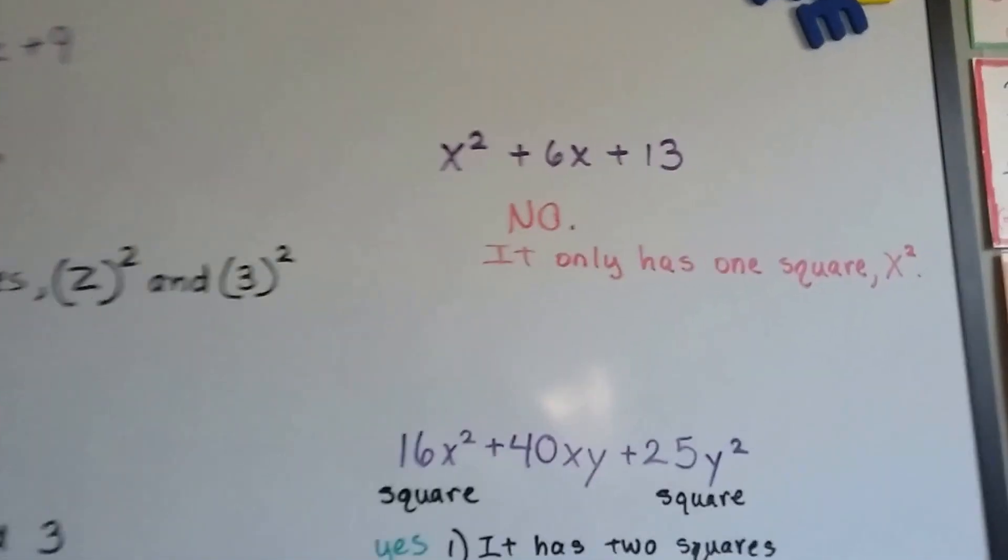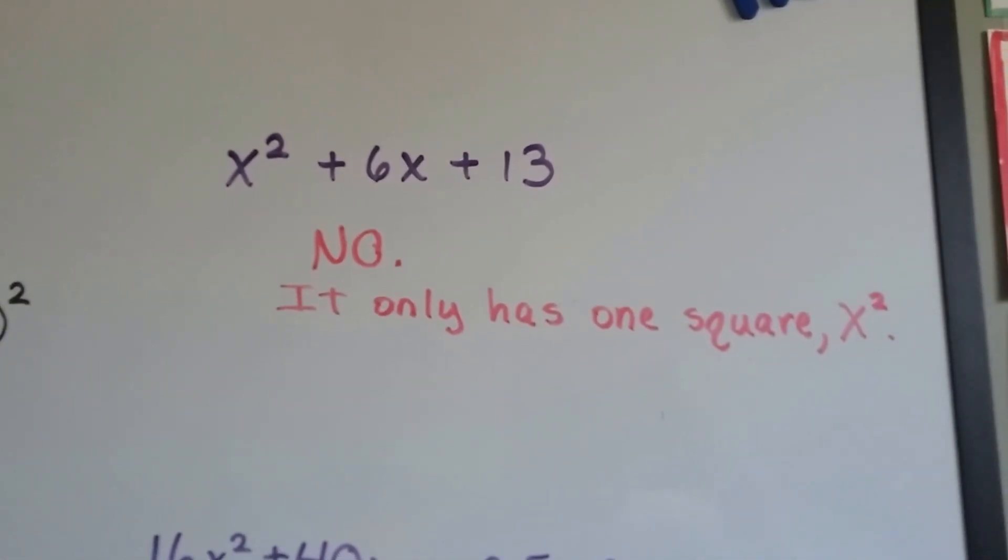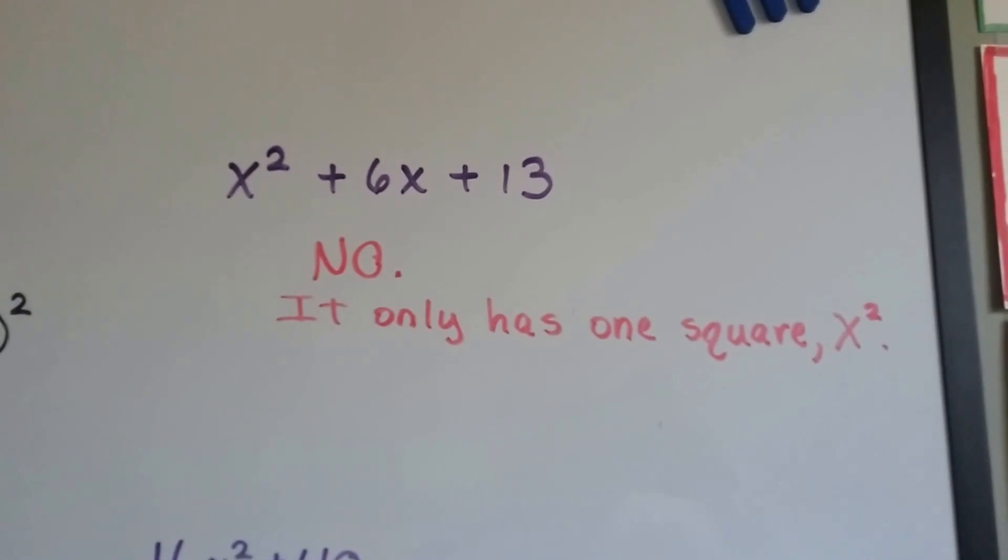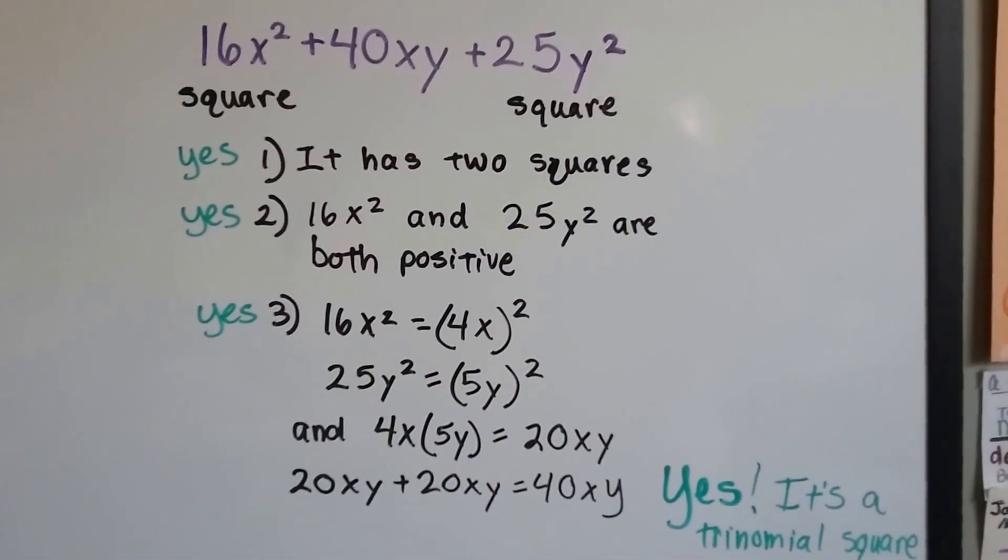Let's take a look at this one. Is this a trinomial square? No, it only has one square, the x squared. That 13 doesn't count. What about this one? Is this a trinomial square?